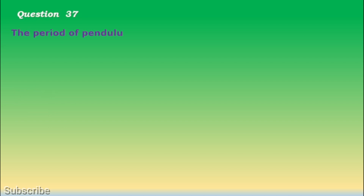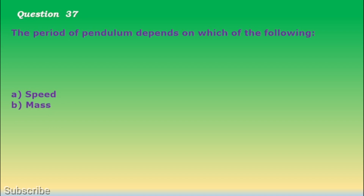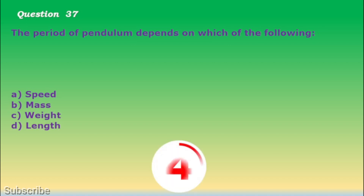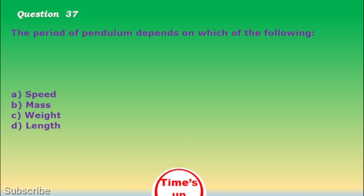Question number 37. The period of a pendulum depends on which of the following? a. Speed, b. Mass, c. Weight, d. Length. The correct answer is letter d. Length.